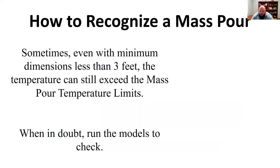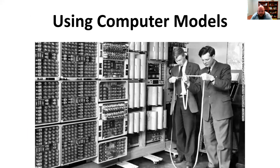Even with a minimum dimension less than three feet, the temperature can still exceed the mass pour limit. When in doubt, run the models to check. We pull out computer models — that's actually how we do most mass pour type checks, and these checks are actually pretty basic once you understand some of the equations.